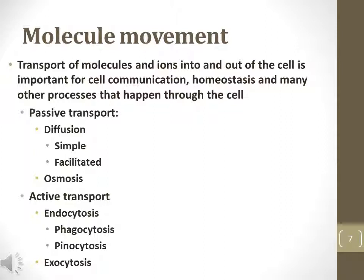Molecules may move across the plasma membrane passively — that is, energy is not used — by simple or facilitated diffusion or osmosis, moving ions or molecules from a region of higher concentration to one of lower concentration. Active transport requires the cell to use energy and move ions from a region of lower concentration to one of higher concentration.